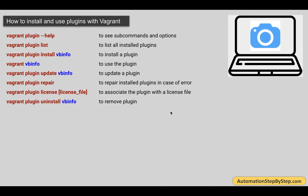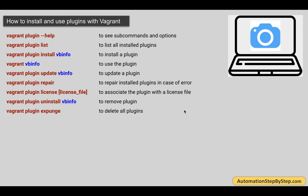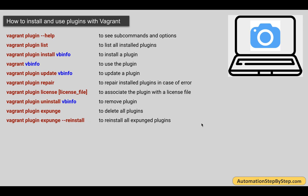We can uninstall a plugin by saying vagrant plugin uninstall and giving a particular plugin name, or we can say vagrant plugin expunge and it will delete all the plugins. And if you want to reinstall all the expunged plugins, we can use vagrant plugin expunge with the --reinstall option.